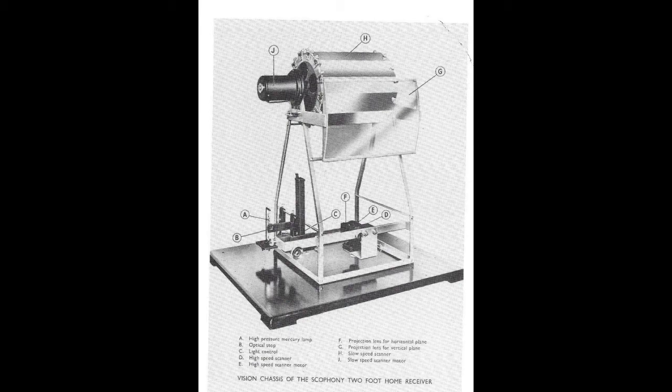Below it on the right-hand side is the high-speed line scanner. This was a metal polygon, usually with 20 faces, rotating at more than 30,000 RPM. These motors had a life of only a few thousand hours and had to be periodically replaced.